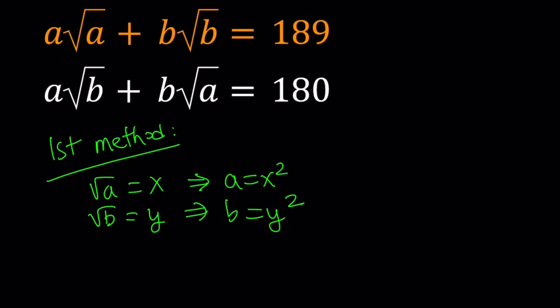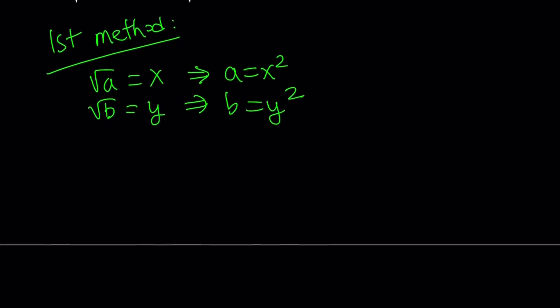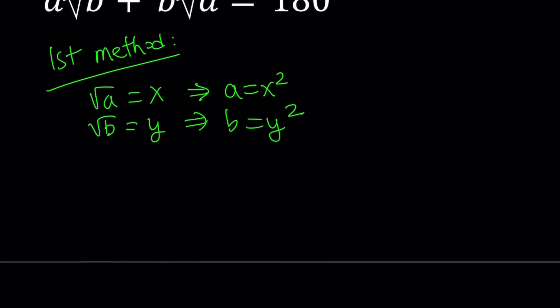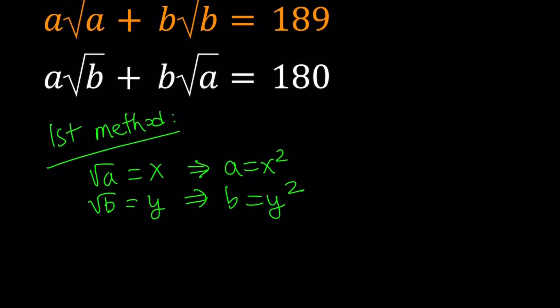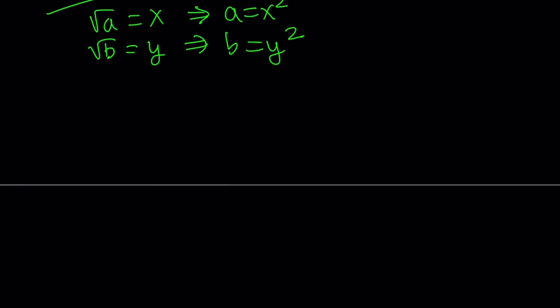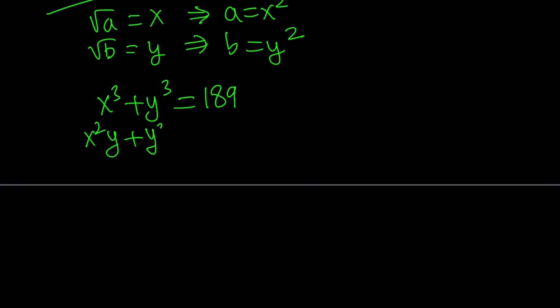Let's see what we can get from here. If you replace a with x squared and square root of a with x, from the first equation you're going to get x cubed plus y cubed equals 189. And from the second equation, you're going to get x squared y plus y squared x equals 180.